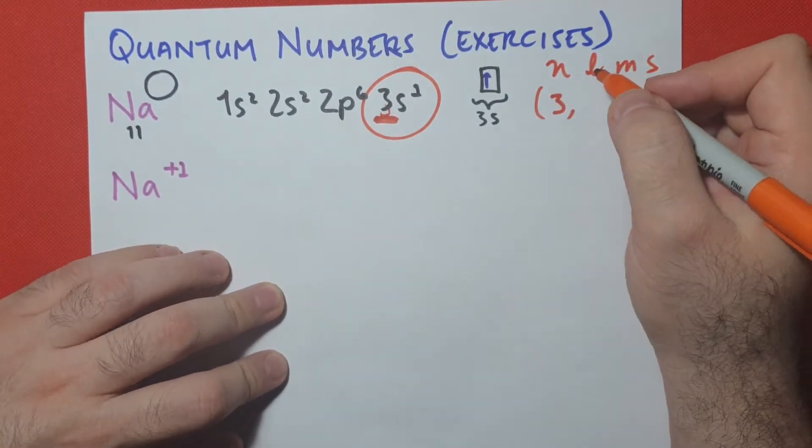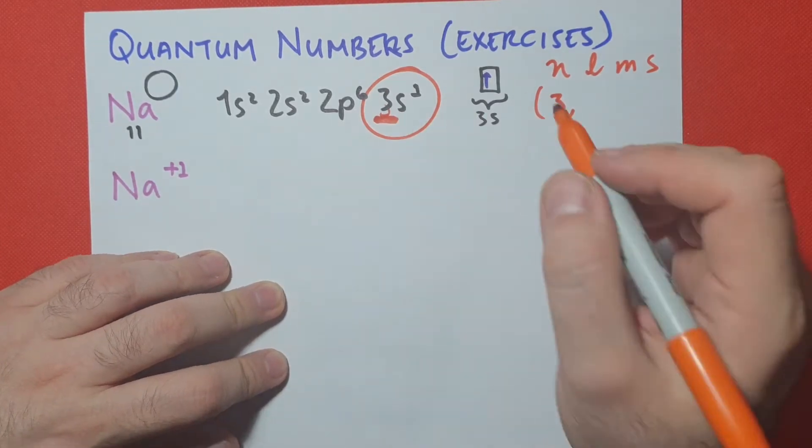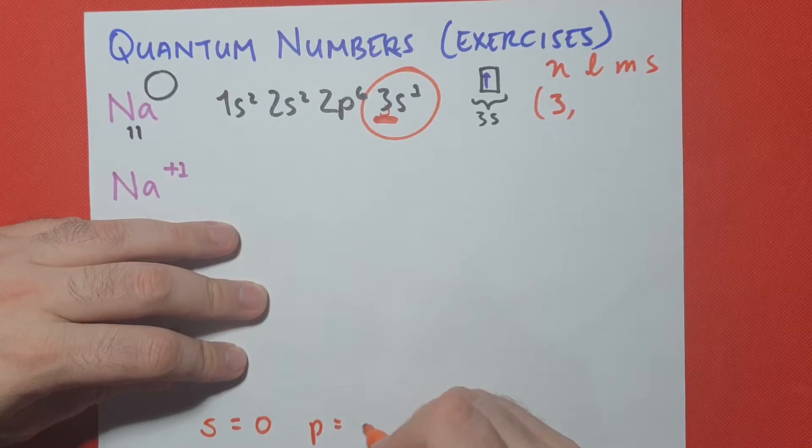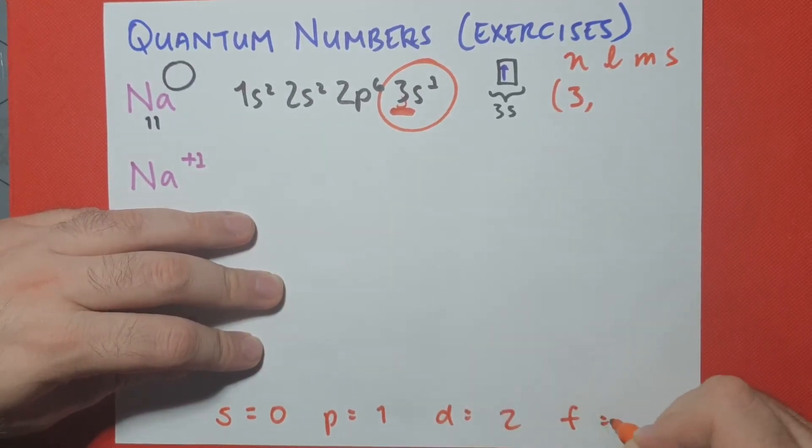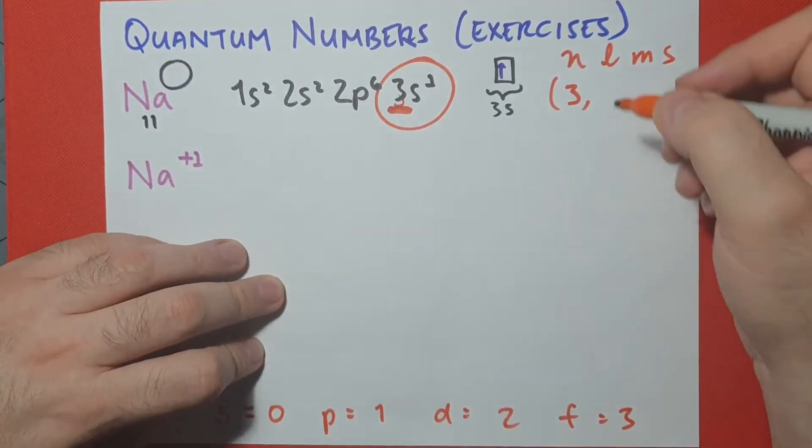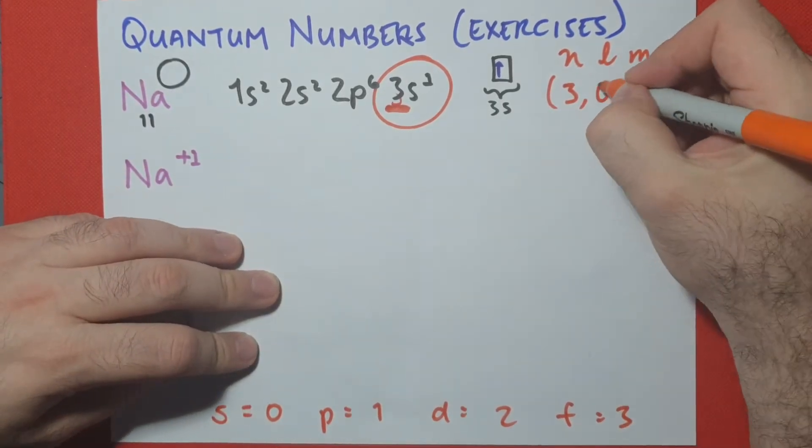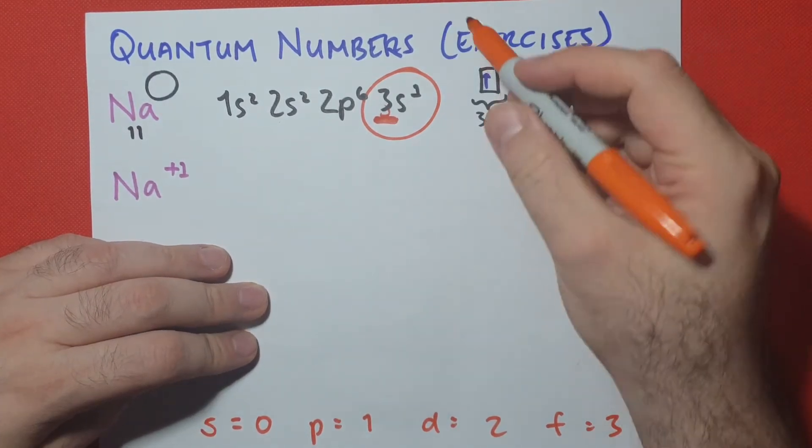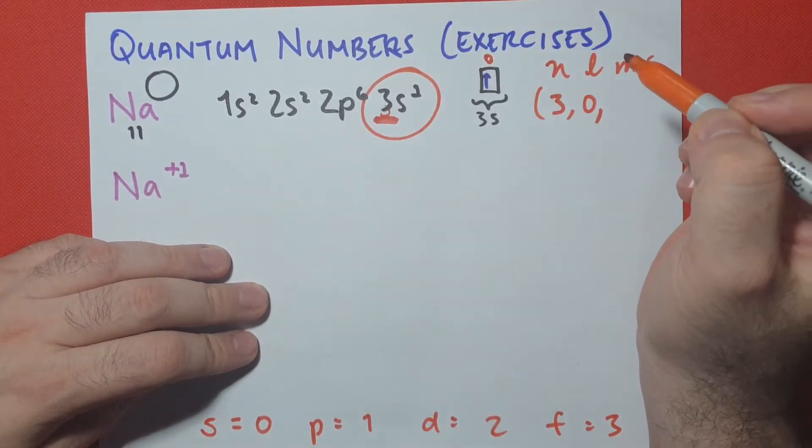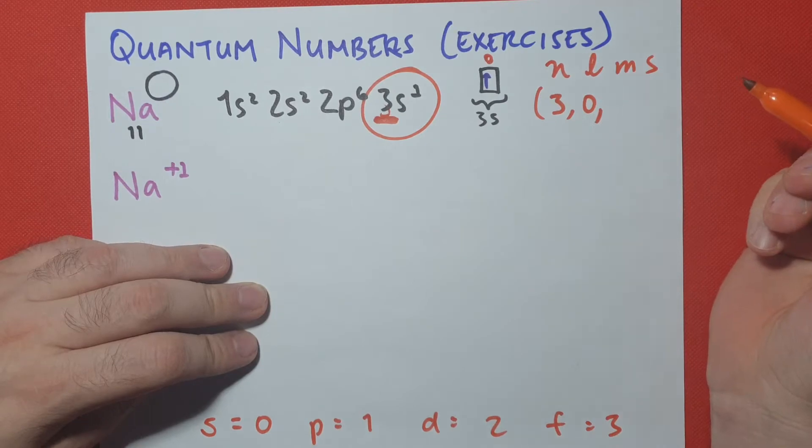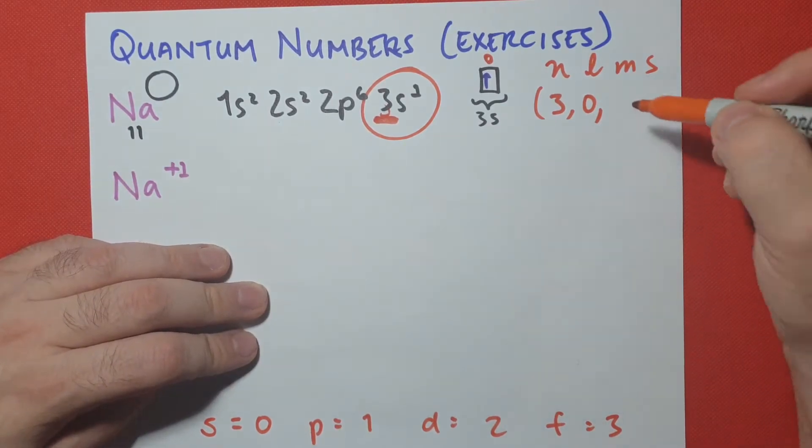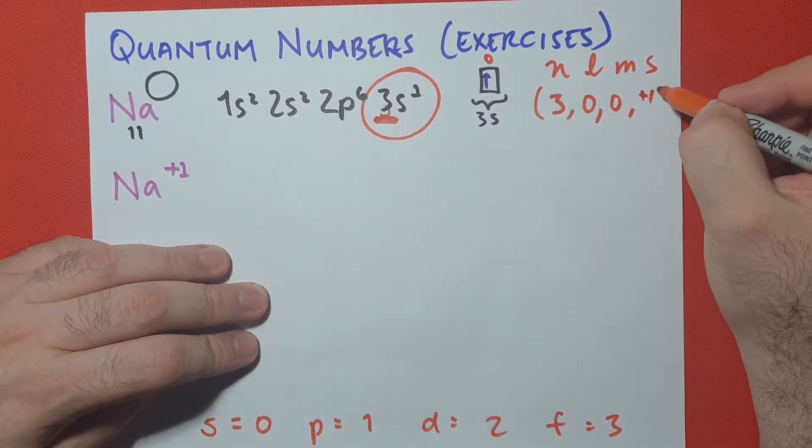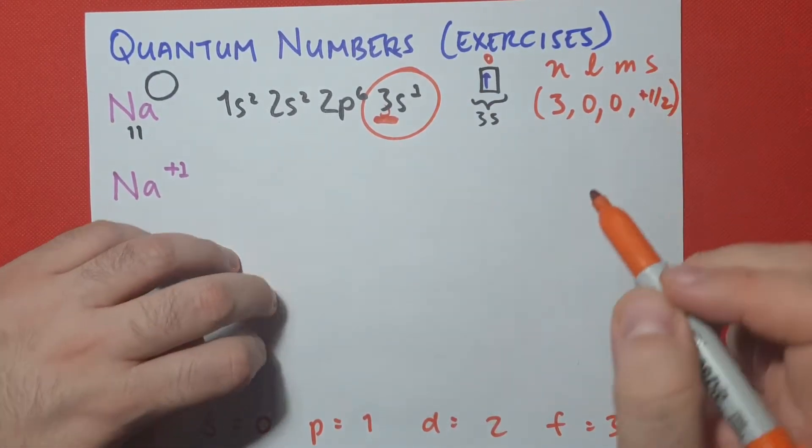And then if we look at L, which is the shape, which is the azimuthal quantum number, we're in an S orbital. And remember, S is 0, P is 1, D is 2, and F is 3. So L is 0, because we have an S orbital, and M is also going to be 0, because there's only one orientation. So if there's only one orientation, the middle orientation is always going to be 0 as well. And last but not least, our spin is pointing upwards, so positive 1 half.